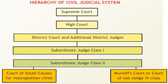The civil judicial system handles cases involving family matters and cases other than criminal cases — for example, disputes relating to marriage, divorce, registration of land, and property. Under the civil judicial system in India, the Supreme Court is at the apex, followed by the High Court, then the District Court and Additional District Judges, followed by Subordinate Judges Class 1 and Class 2. Subordinate Judges Class 2 are subdivided into the Court of Small Causes for metropolitan cities and the Munsiff's Court or Court of Sub-Judge Class 3.